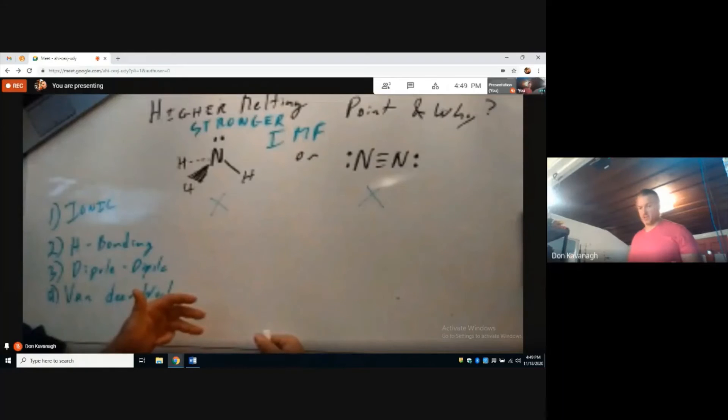If the hydrogen is bound to a carbon, no dice. And there has to be a lone pair of electrons present. This dinitrogen here doesn't have hydrogen present, so it cannot participate in hydrogen bonding.